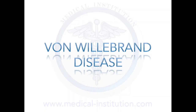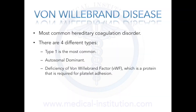Von Willebrand disease is the most common hereditary coagulation disorder. There are four different types, but we're mainly going to focus on type 1, which is the most common type. This is an autosomal dominant disorder that decreases the levels of von Willebrand factors, which are proteins that are required for platelet adhesion.